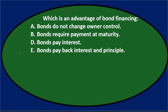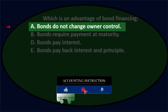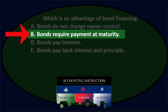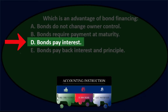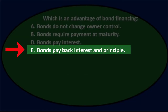Next question: which is an advantage of bond financing? A) bonds do not change owner control, B) bonds require payments at maturity, D) bonds pay interest, E) bonds pay back interest and principal.